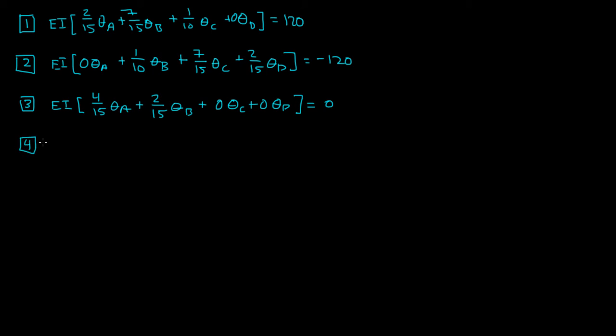And then finally our fourth equation, EI, we had 0 theta A plus 0 theta B plus 2 over 15 theta C plus 4 over 15 theta D. And that was equal to 0.